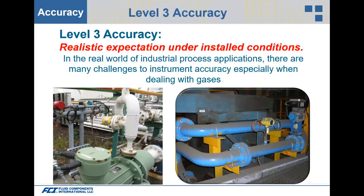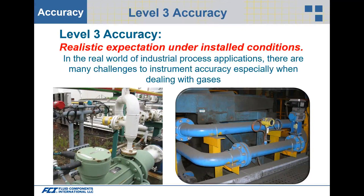Level three is the realistic expectation under installed conditions. When talking about air and gas applications — aeration basins, digest gas, flare gas, flue gas — we're typically talking larger line sizes, using a point measurement inside the pipe. In large line sizes, you don't have the luxury of lots of straight run to produce a good turbulent flow profile.